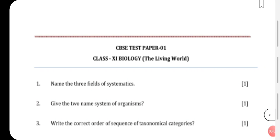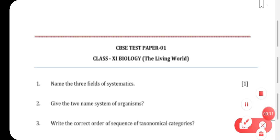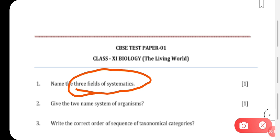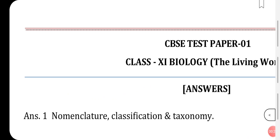Hello students, today we will be doing some very important questions from the class 11th biology chapter 1. Let us see the first question: name the three fields of systematics.